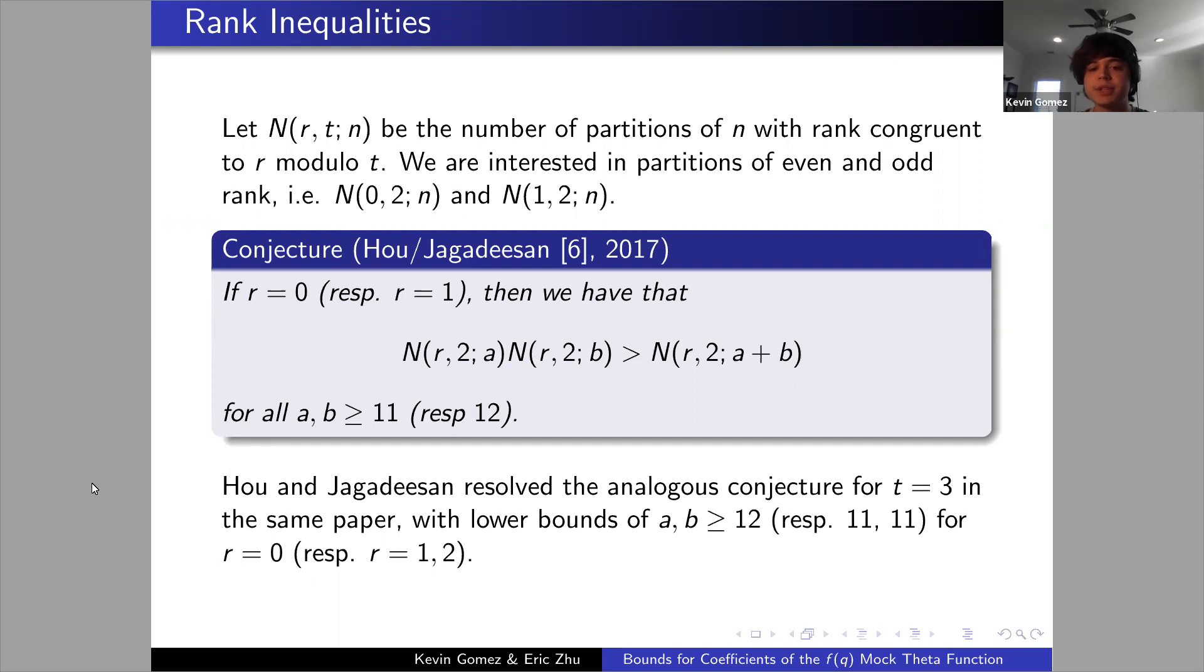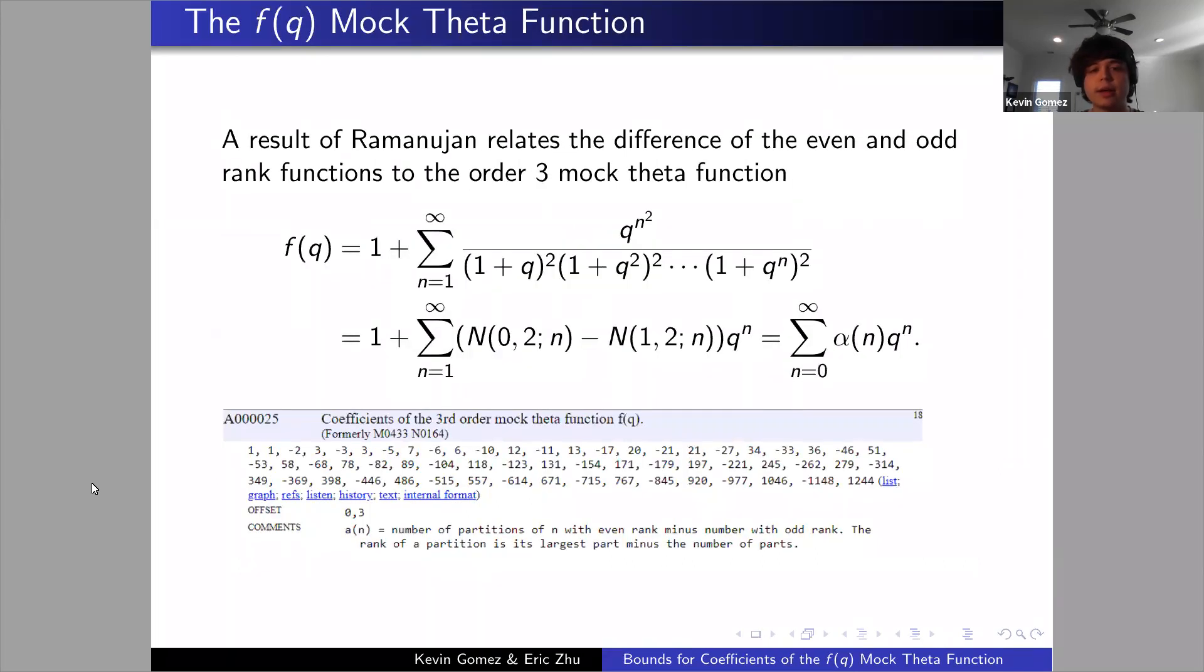The paper where Howe and Jagadeesan presented this conjecture was in the same paper in which they proved the analogous conjecture for t equals 3, but the techniques they applied were far more analytic in nature and couldn't quite extend to the t equals 2 case. So in order to resolve this conjecture, we had to take a different approach which was mainly motivated by our primary advisor Dr. Riad Masri at Texas A&M University. It all centers on the f(q) mock theta function, which is an order 3 mock theta function originally devised by Ramanujan. It has a particularly pleasant Fourier expansion which simply relates the difference between even and odd rank partitions.